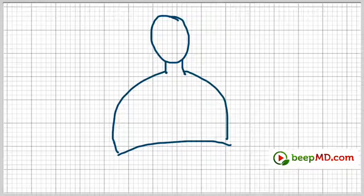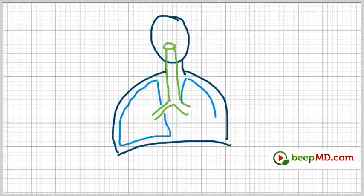So if this is our chest wall, we have an air pipe which is called trachea through which the air goes in and out of the lung, and then we have the lungs, two lungs in our chest.